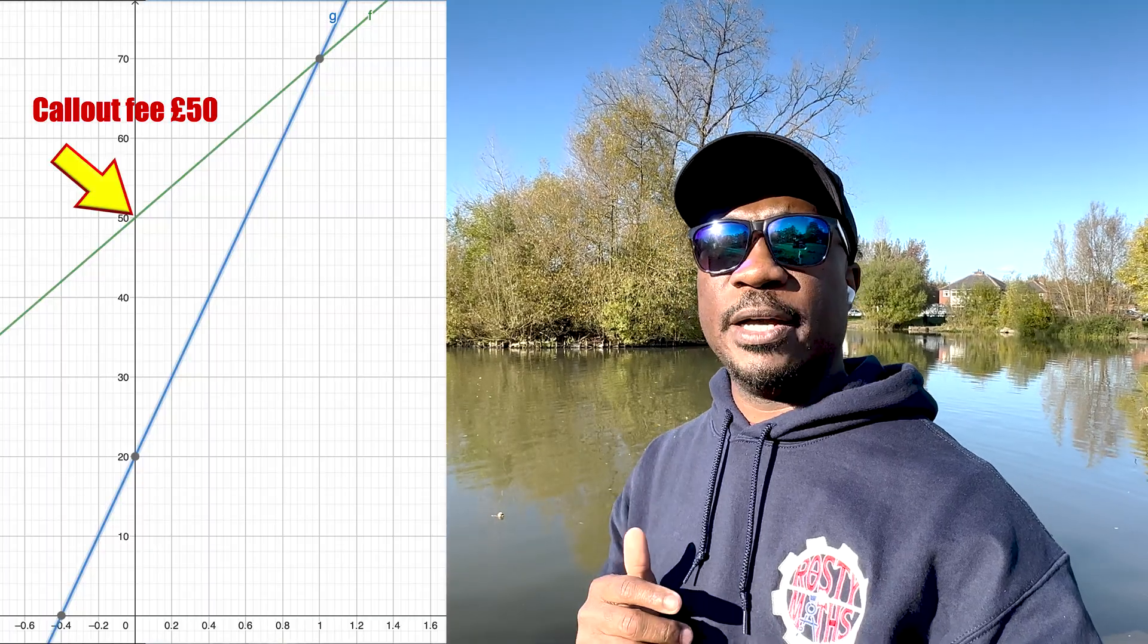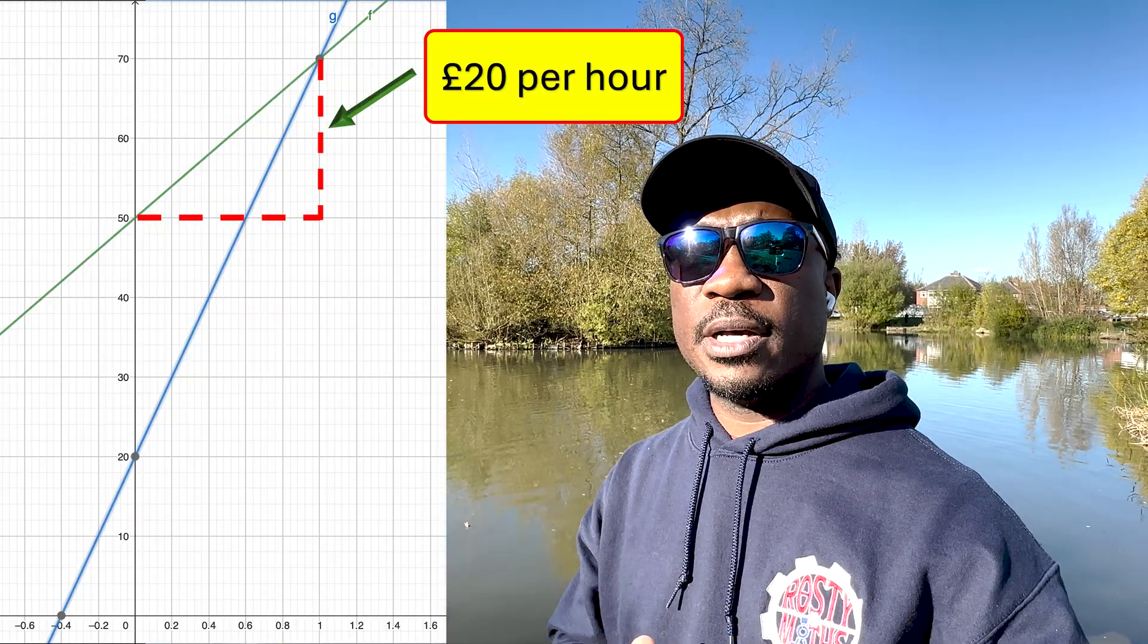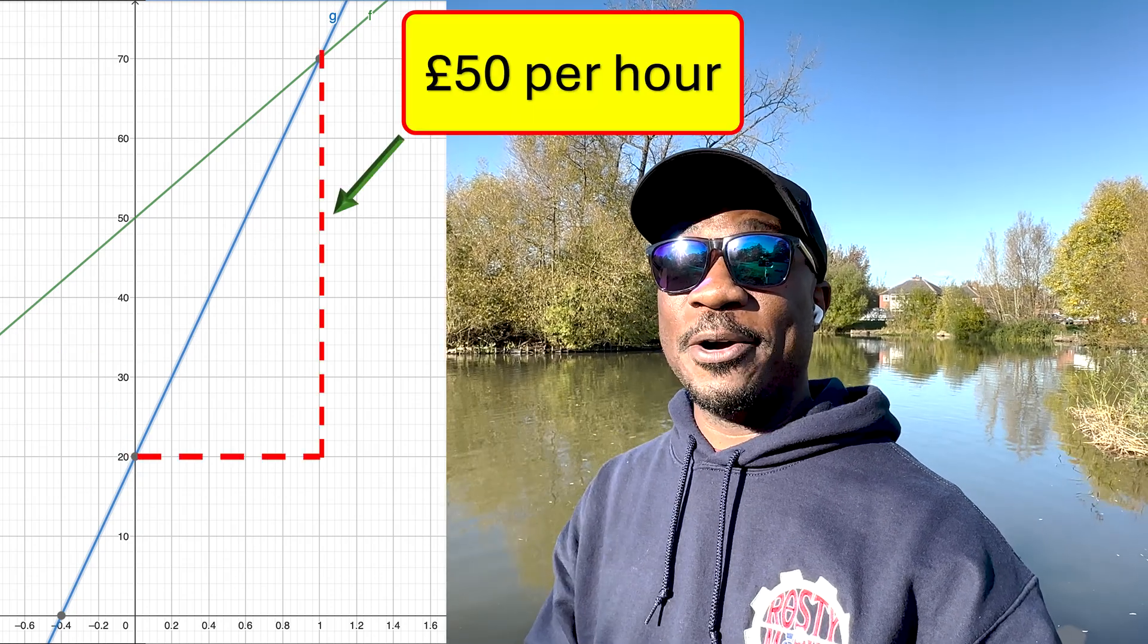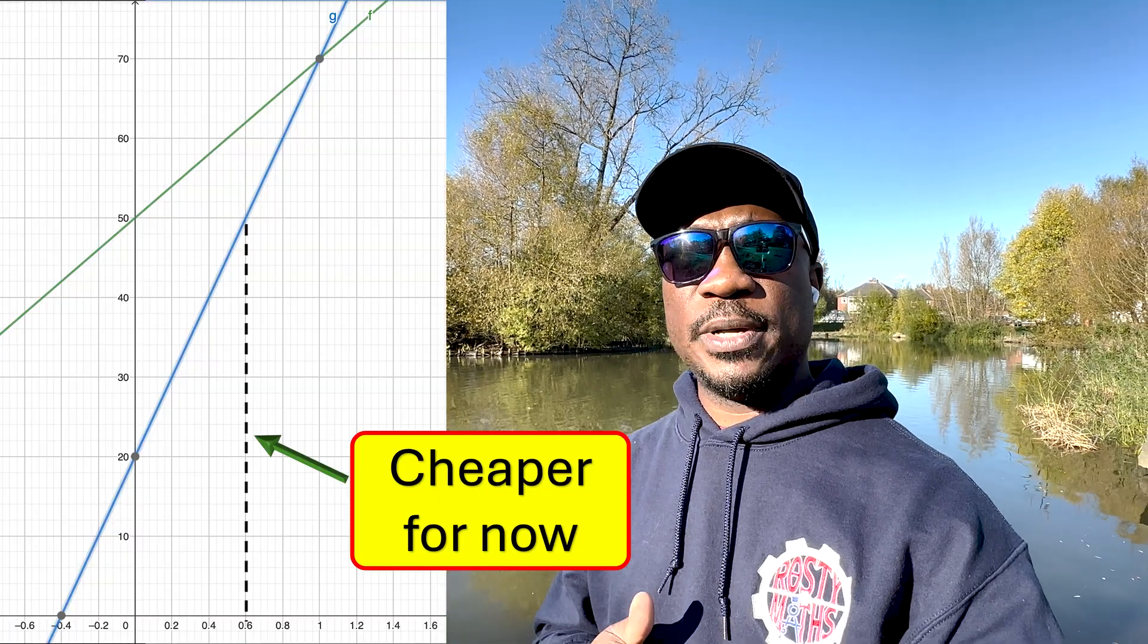Now, let's say you ask yourself the question, where does this become applicable? Well, let's look at an example as we've already got it here. Let's say you have to vet a couple of plumbers and see how much it's going to cost you for them to come and do some work at your house. Now, one plumber charges a starting fee or a call-out fee of, say, 50 pounds, but then they charge you 20 pounds per hour after that. The second plumber, on the other hand, charges you 20 pounds and they charge you then 50 pounds per hour after that. At which point do you start thinking which one's going to be more expensive when it comes down to how long you need them for?